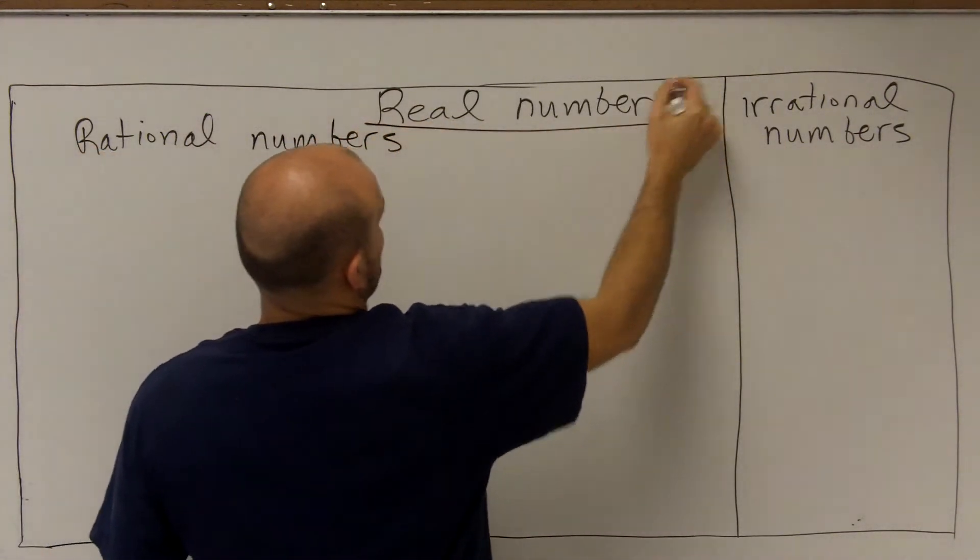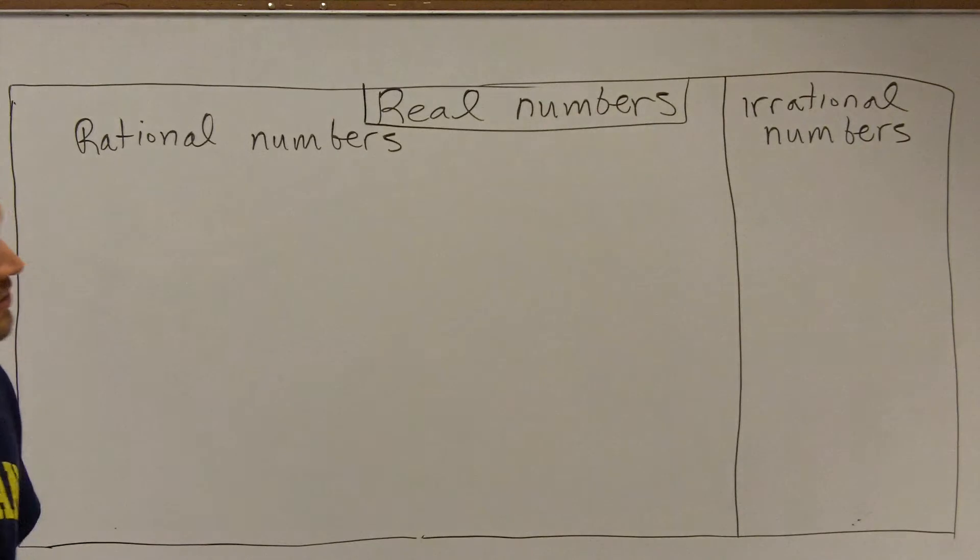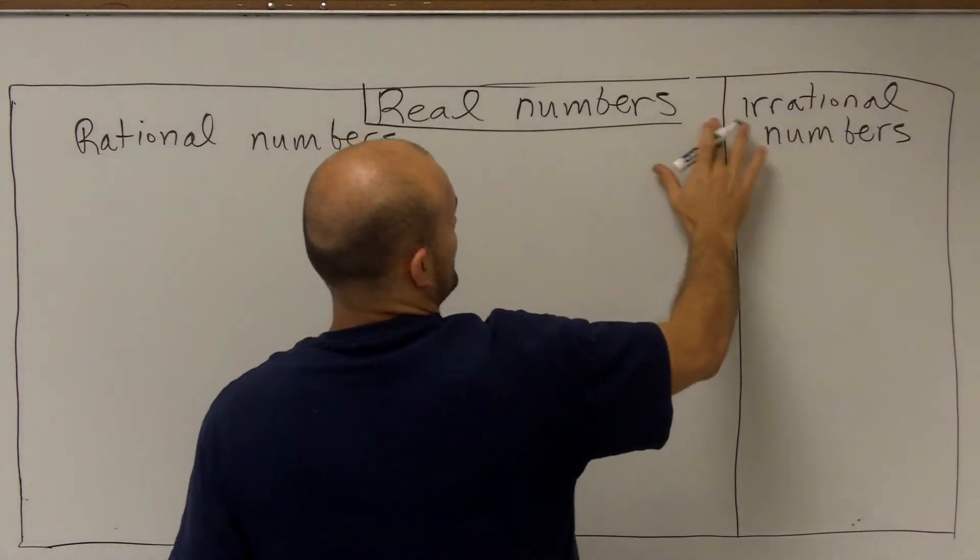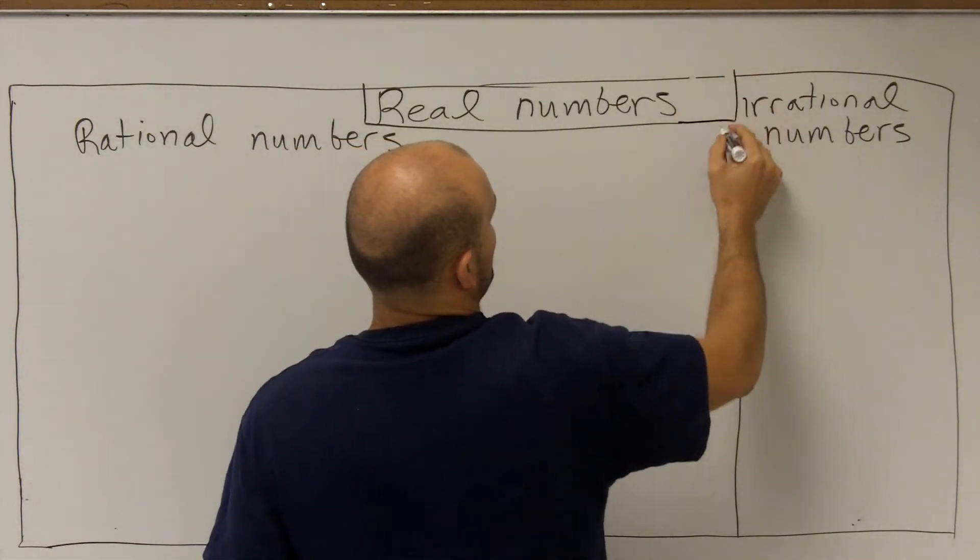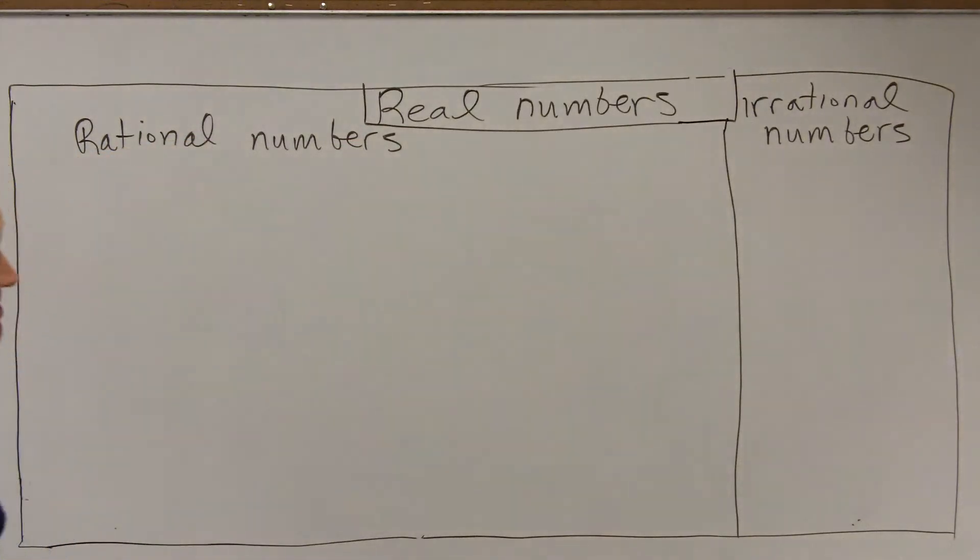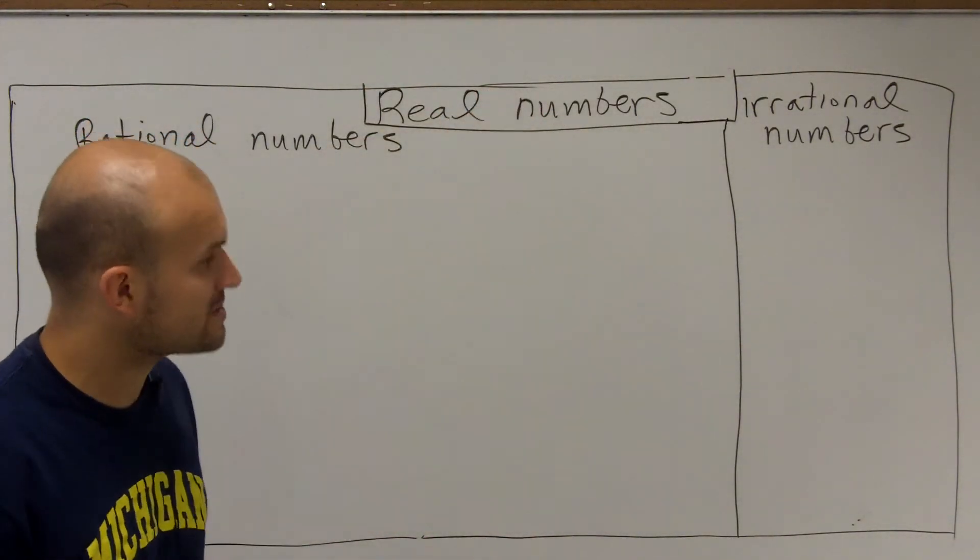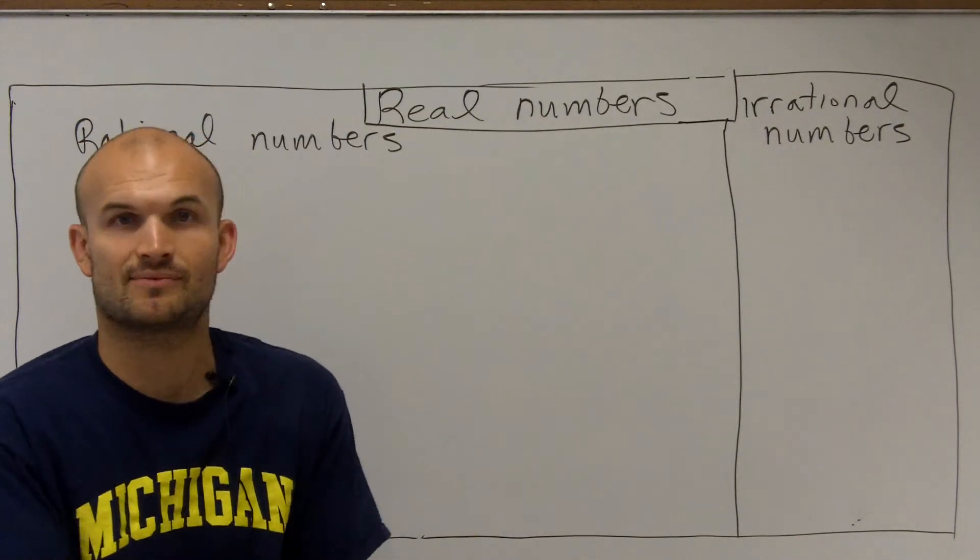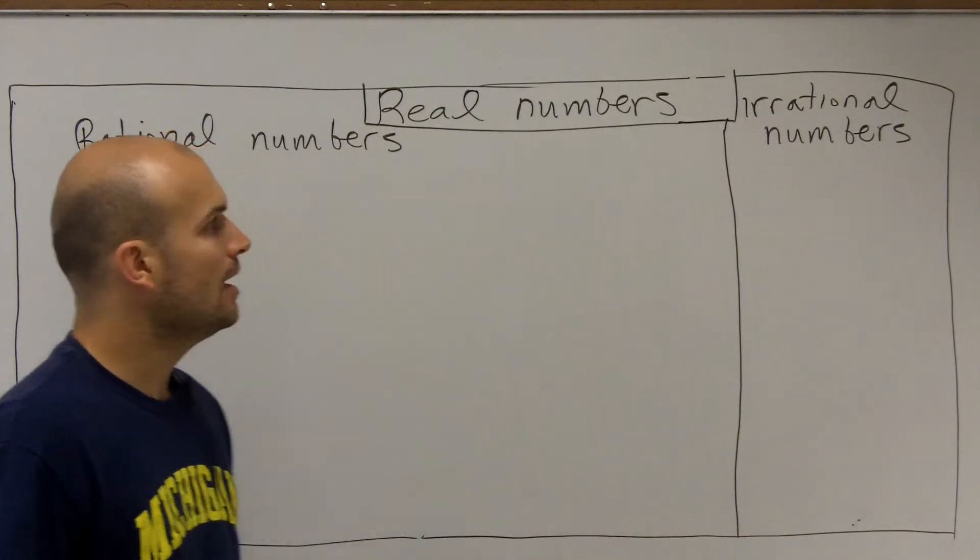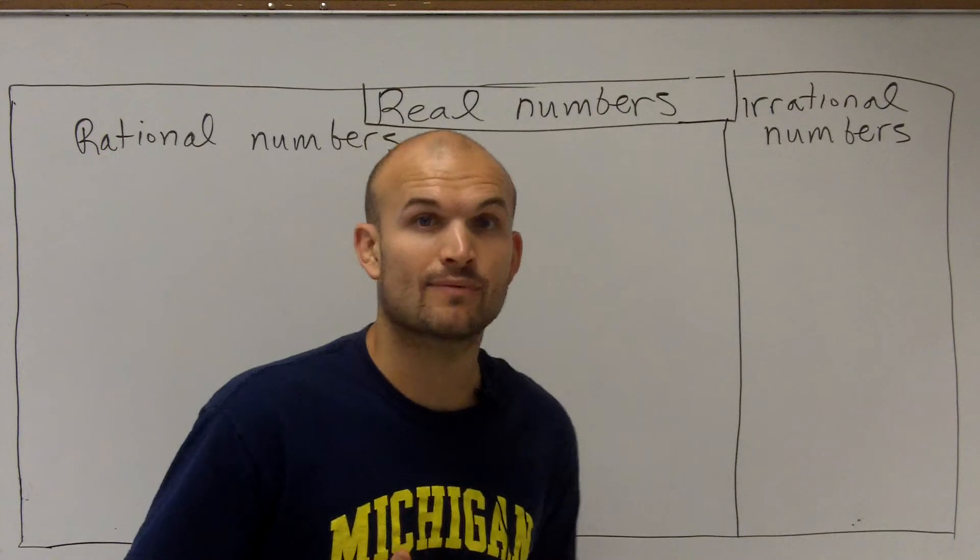So what I want to do is actually, let's not cut off the real number part. These are all real numbers. Both irrational and rational are going to produce us our real numbers. And they're real because we can see them, we can understand them, we can count them. But let's first go ahead and talk about irrational numbers.